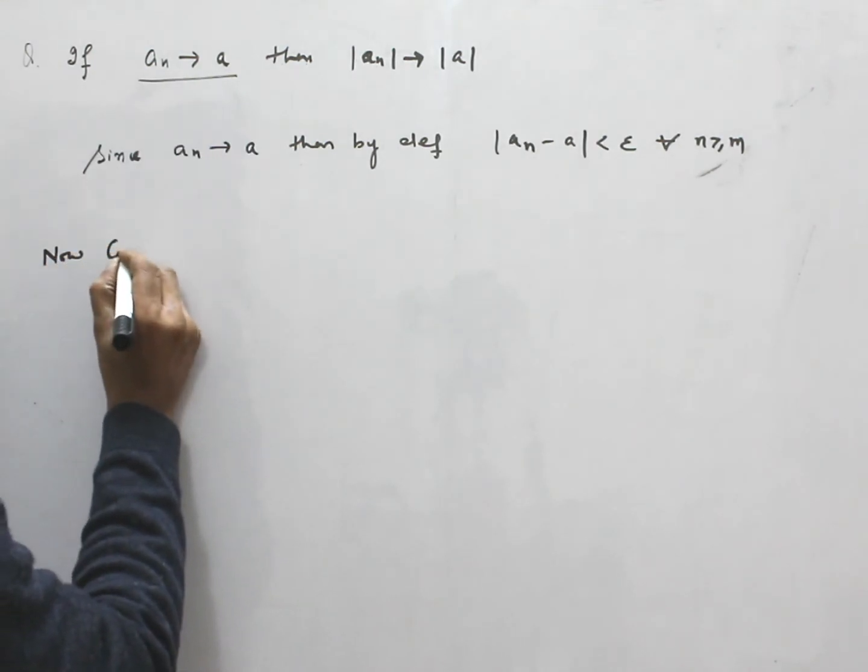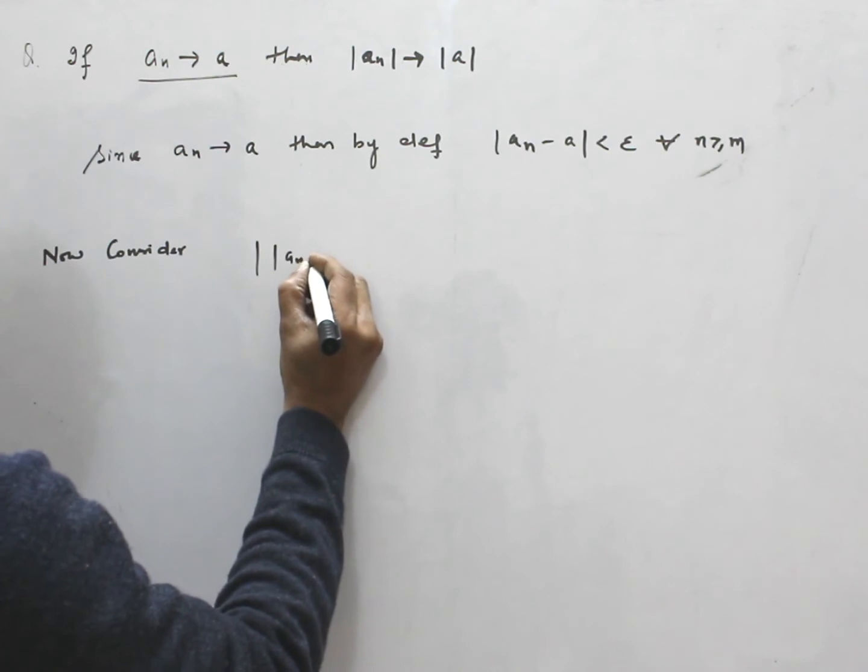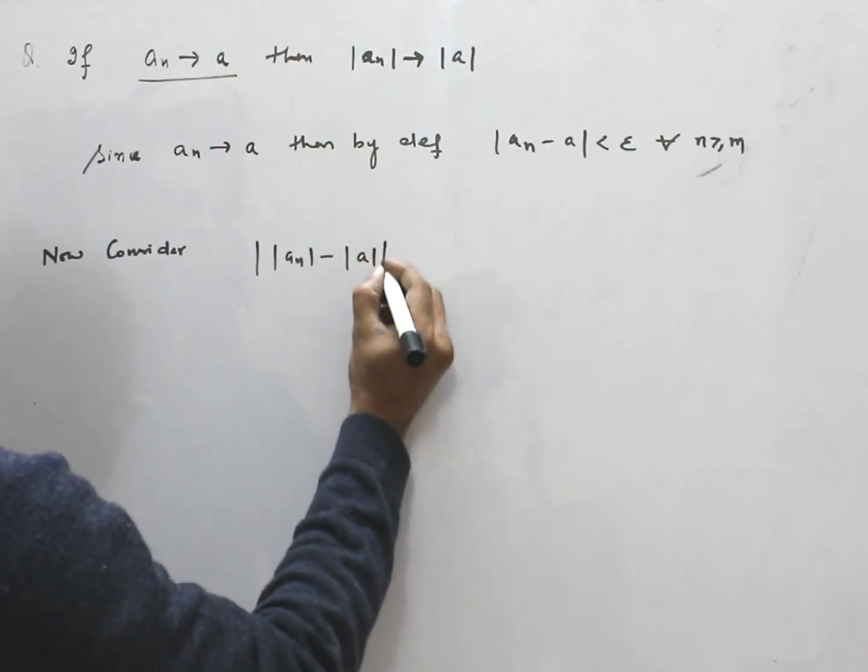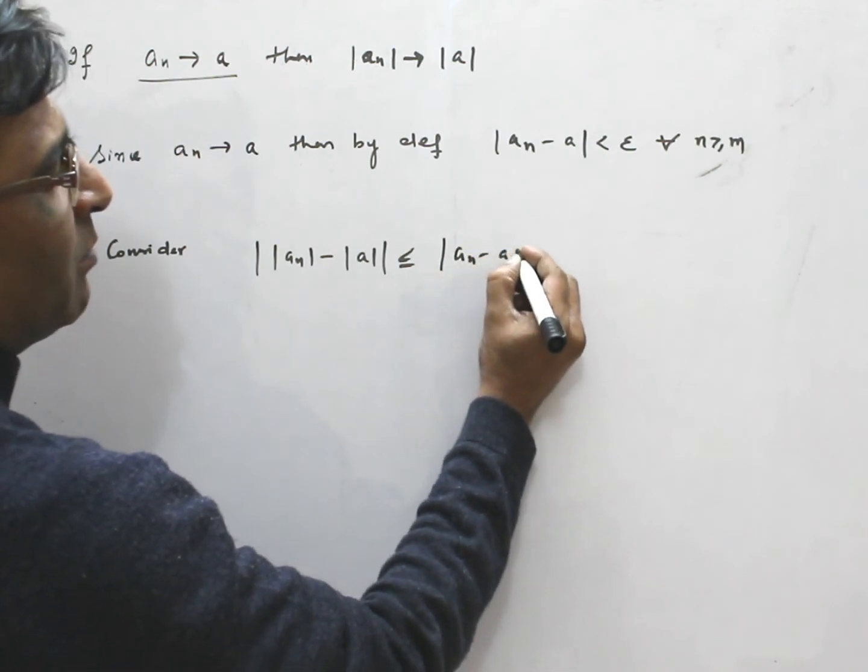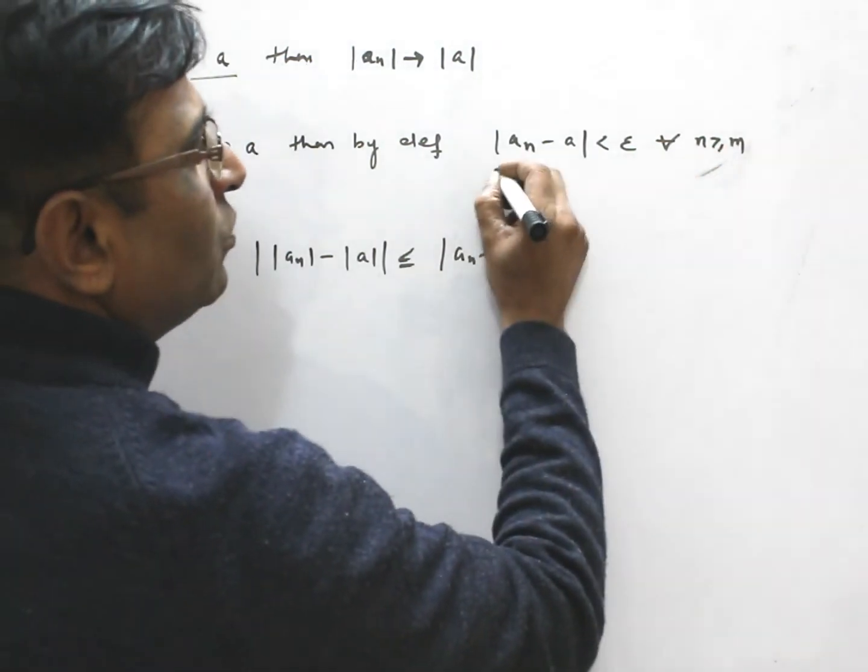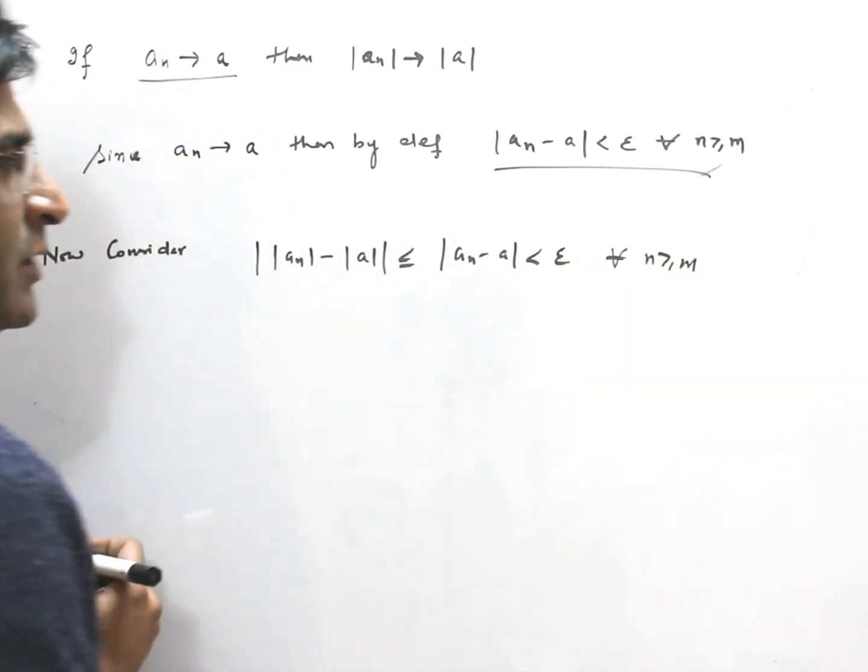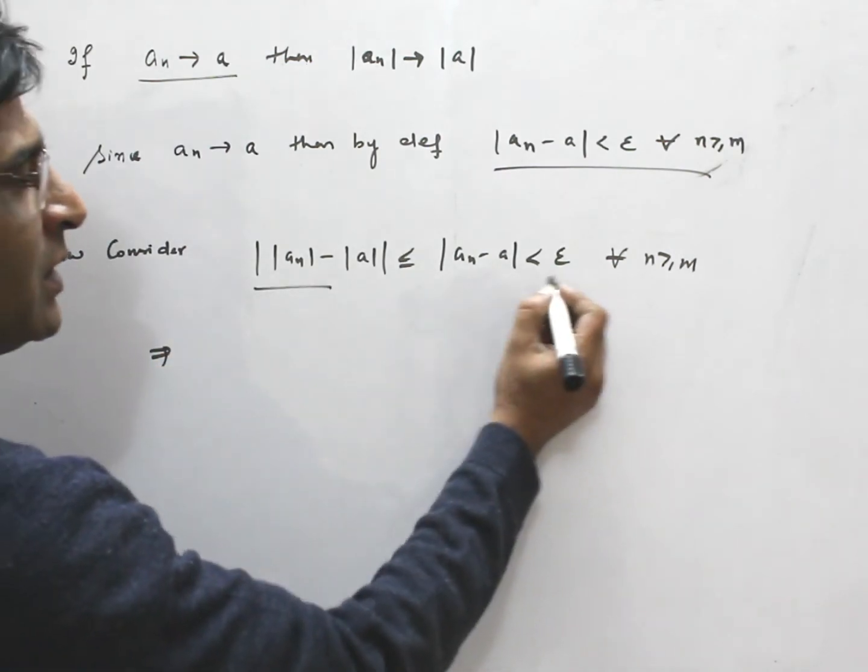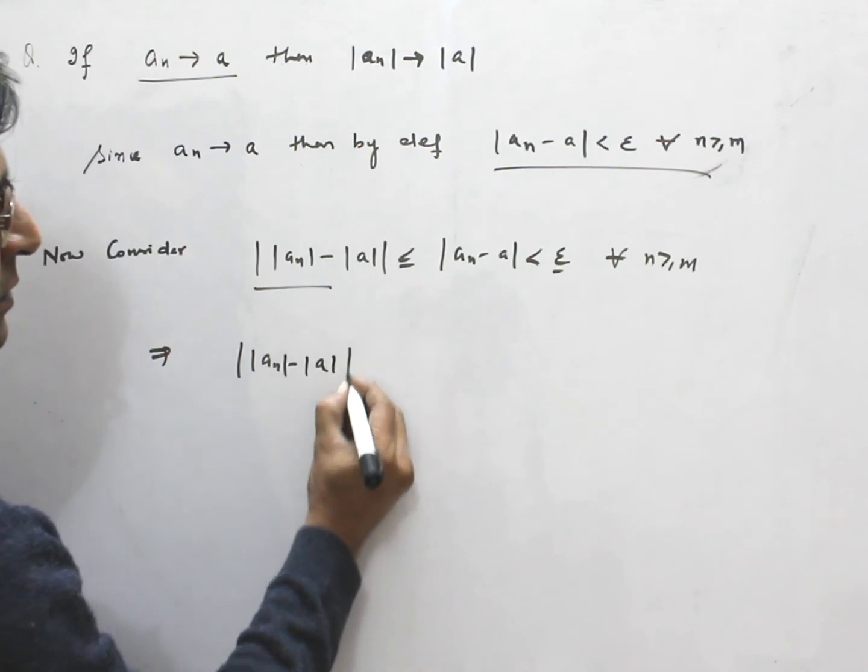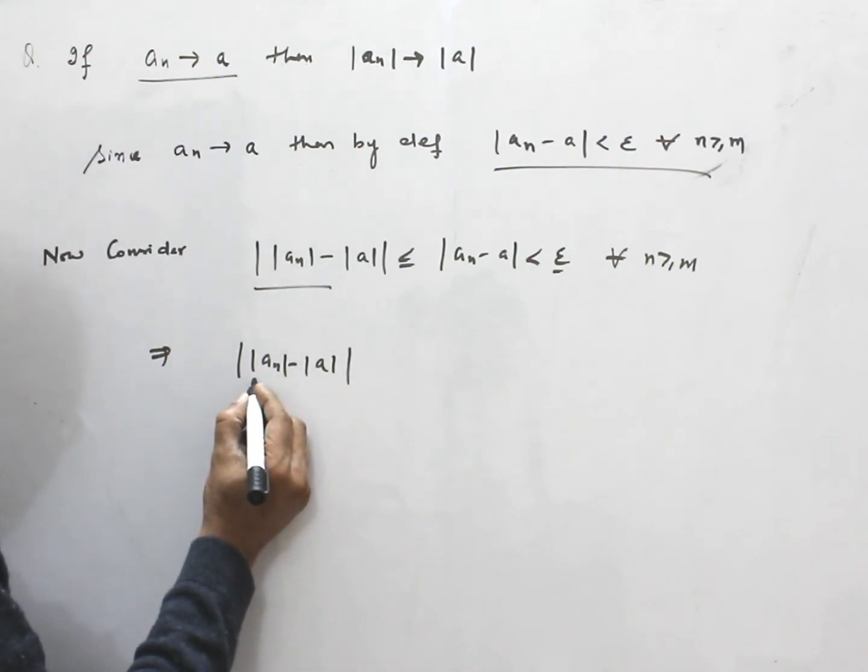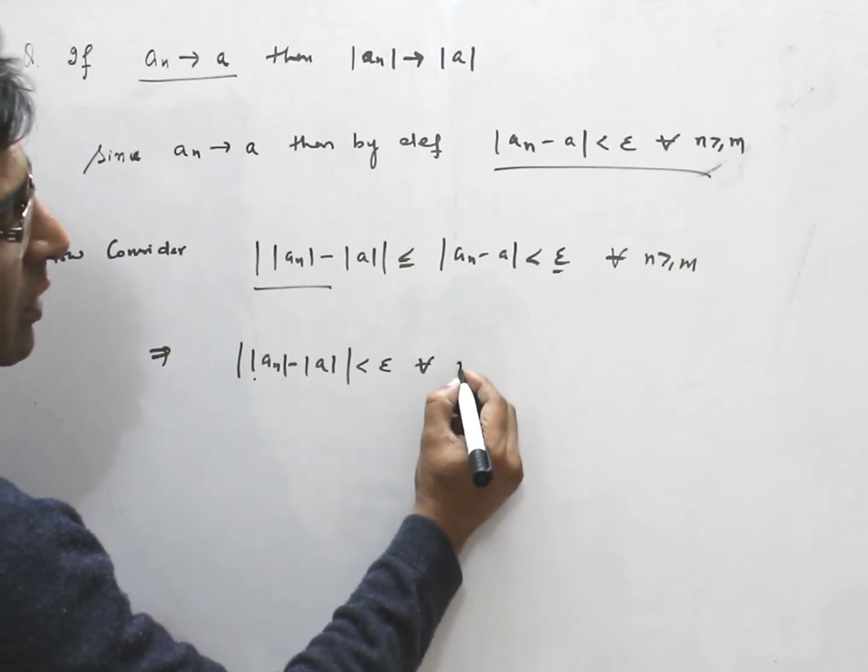Now, consider norm of norm of a n minus a. This is, just to prove the result, less than or equal to a n minus a. Now, using this result, this is less than epsilon for all n greater than m. That means, we conclude from this and this, mod of a n minus mod of a less than epsilon for all n greater than m.